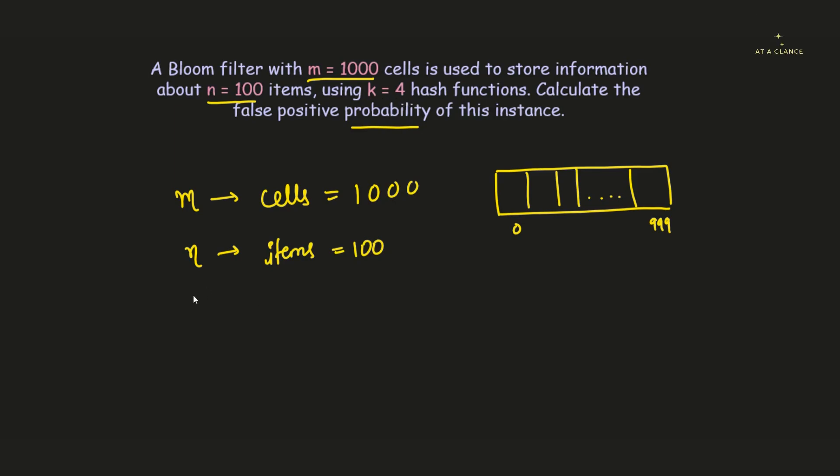What is this k? k is the number of hash functions. Now if you remember, what exactly is a hash function? It takes an input and converts it into an output in such a way that it is irreversible to get that particular input again. The total number of hash functions that we are going to use in this particular Bloom filter problem is 4. With this particular set of given data, we need to find out the false positive probability of this instance.